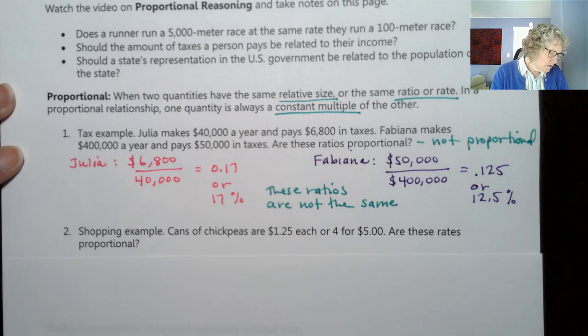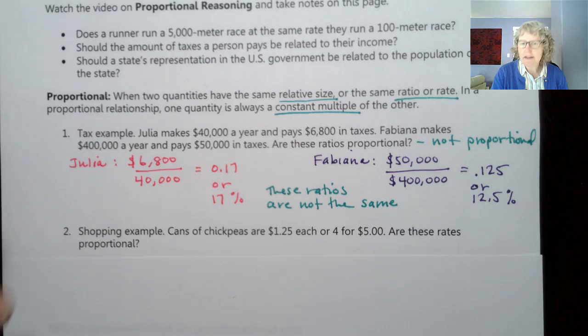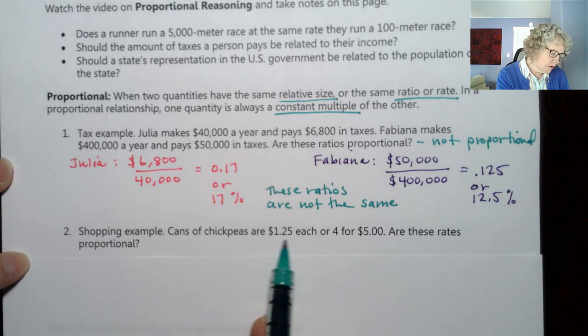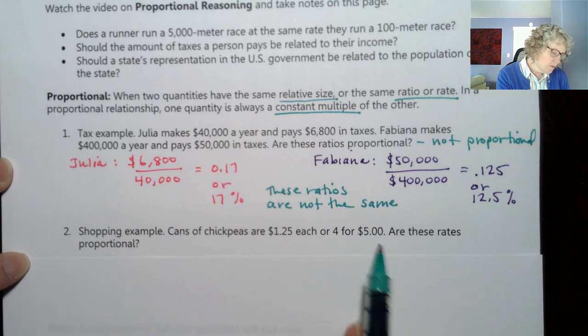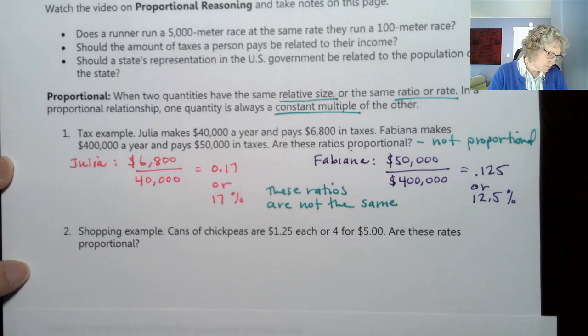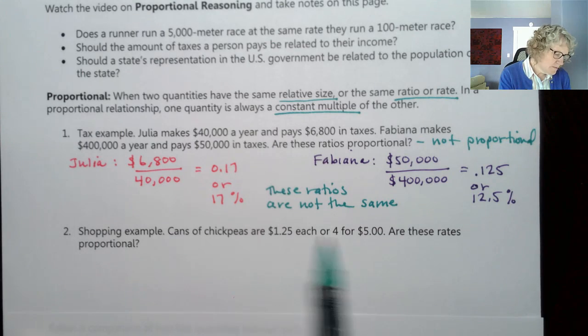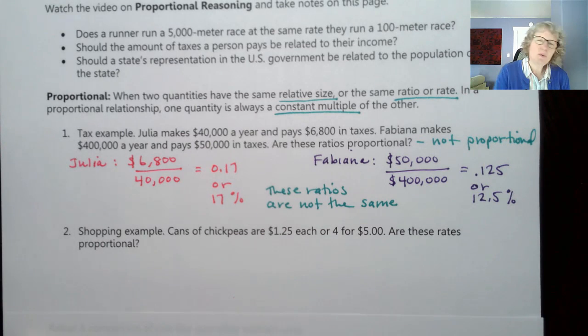What about a shopping example? So maybe you have looked at rates, unit rates as you're shopping. Cans of chickpeas are $1.25 each, or four for $5. Are these rates proportional? So again, we're going to be comparing with division here. So let's divide.